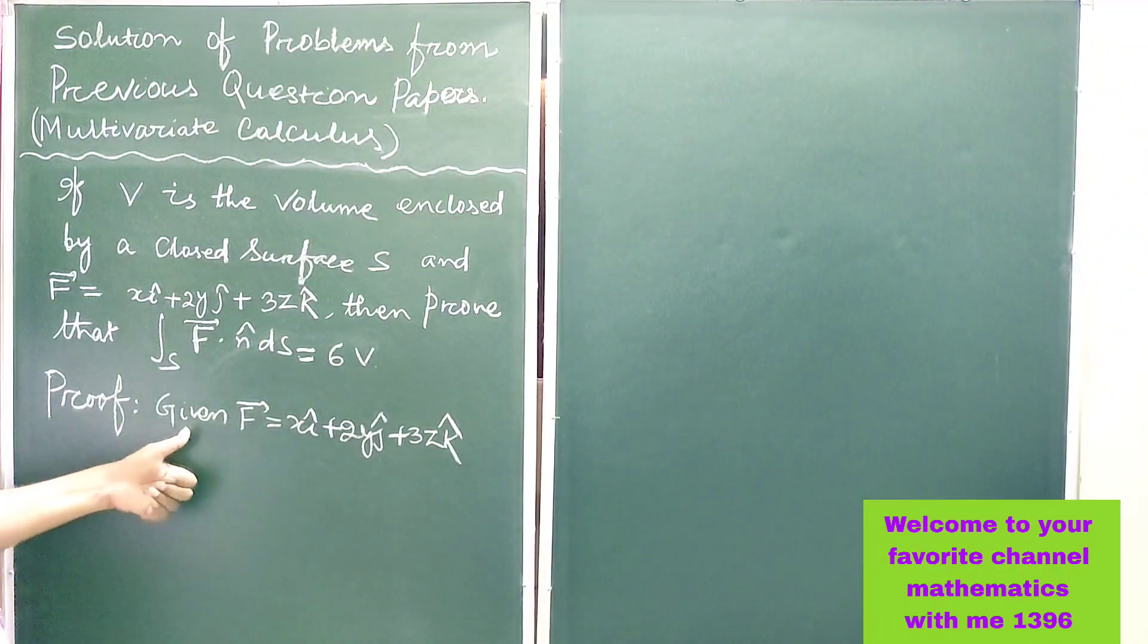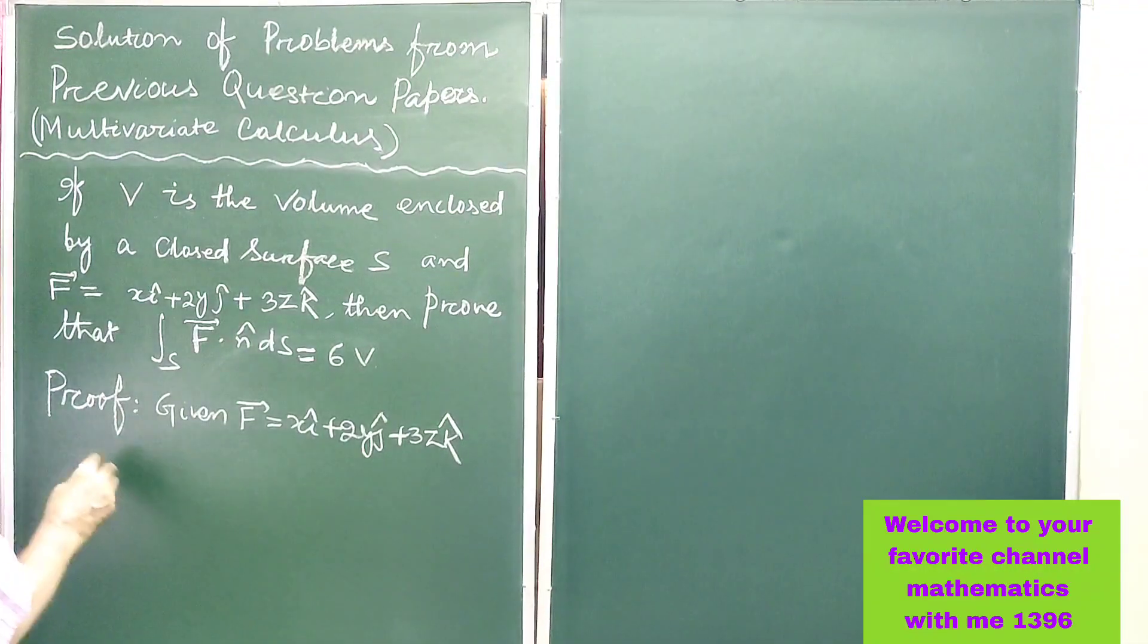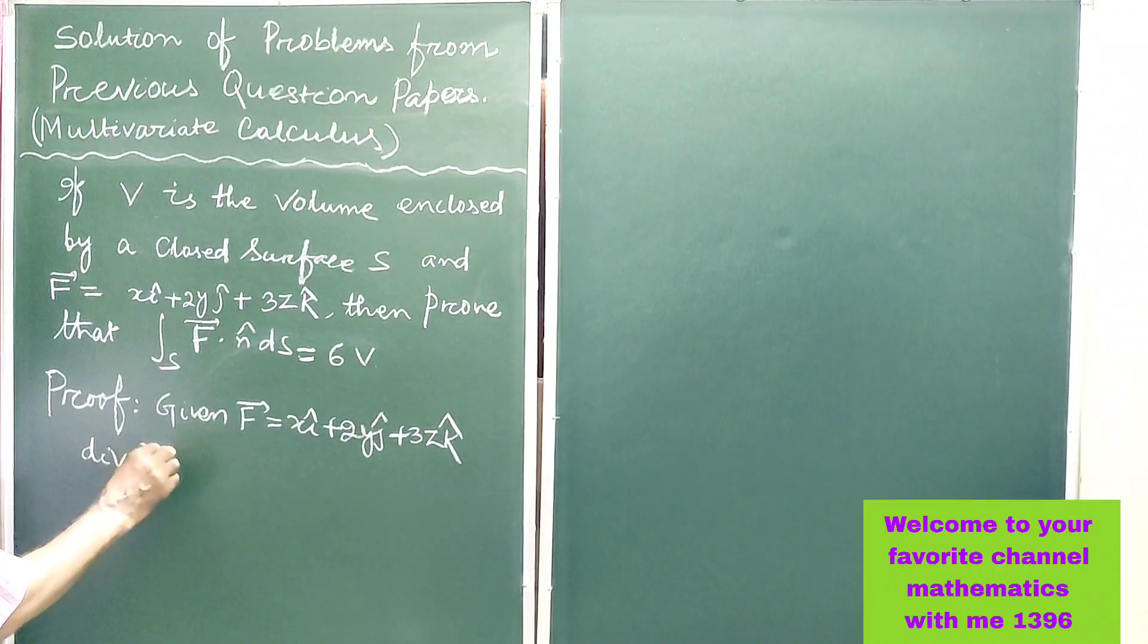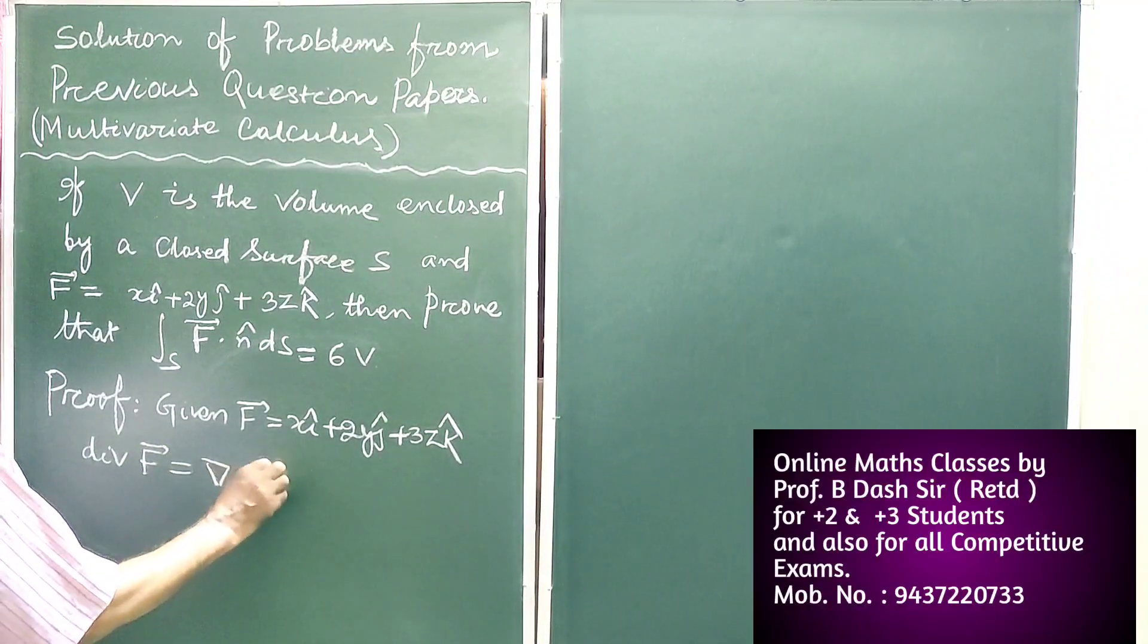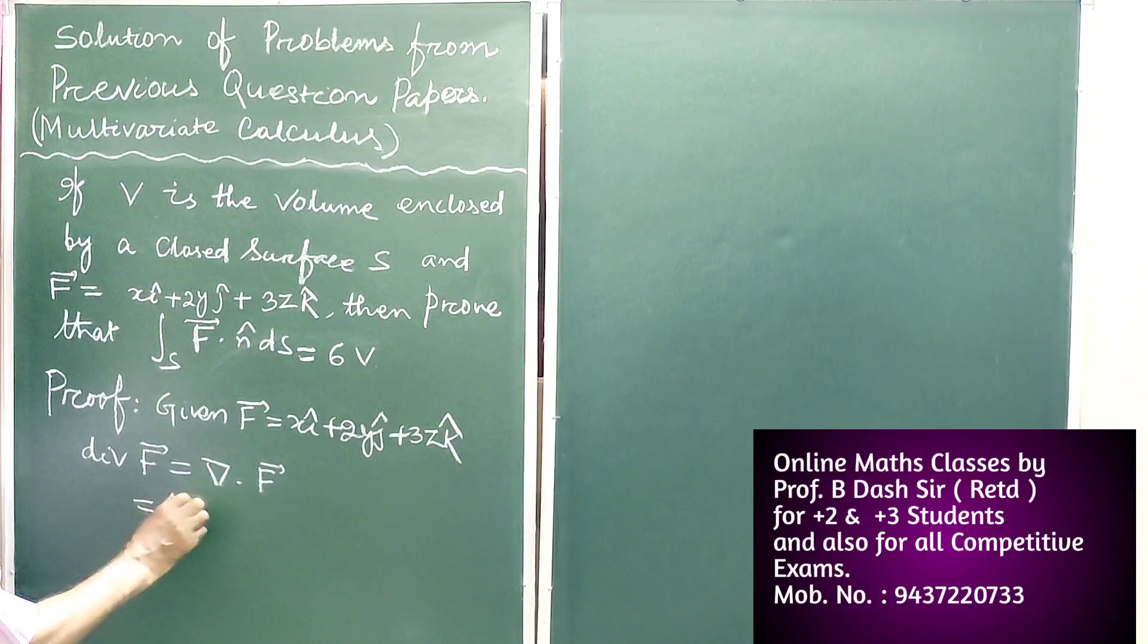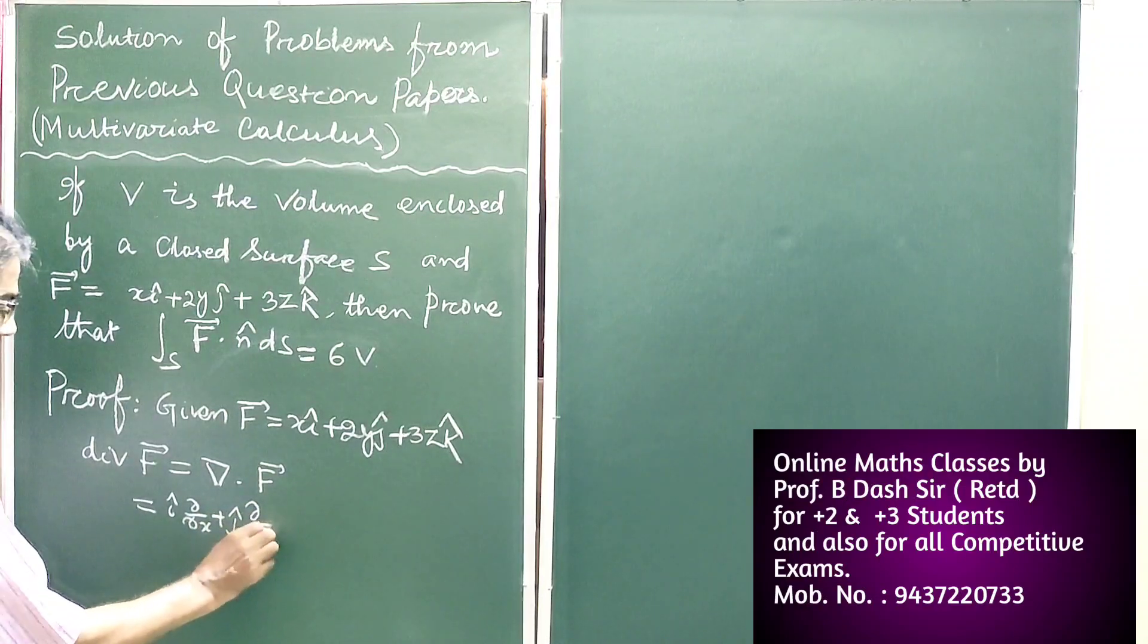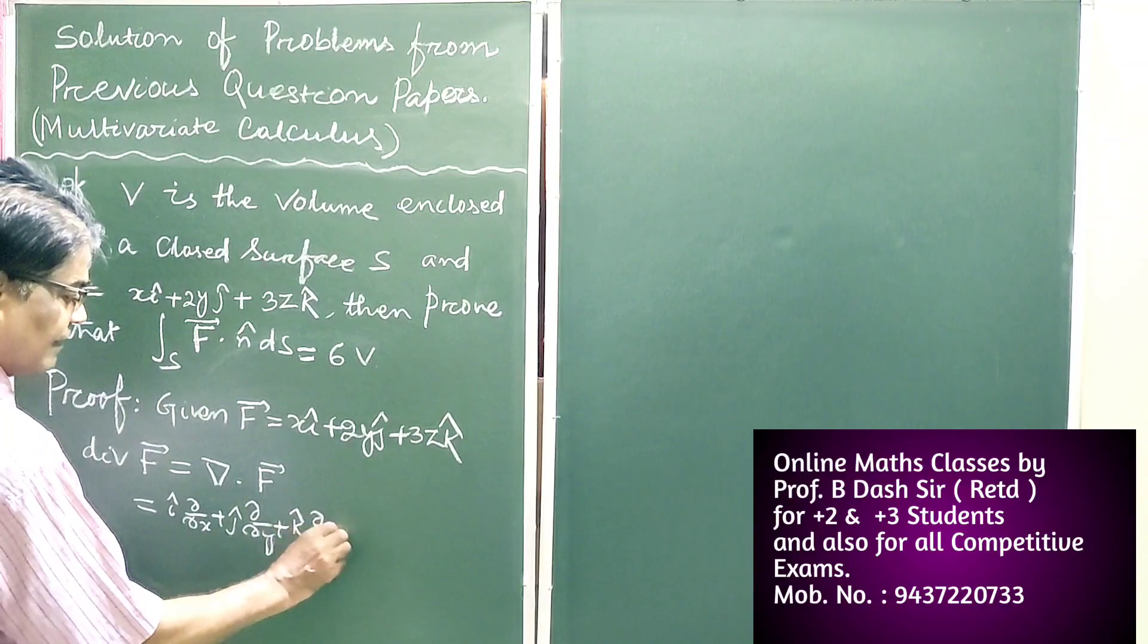Proof: Given vector F is equal to x i cap plus 2y j cap plus 3z k cap, then divergence of vector F is equal to nabla dot vector F, which is i cap del by del x plus j cap del by del y plus k cap del by del z.